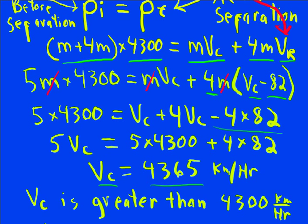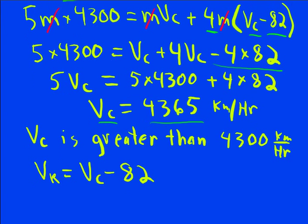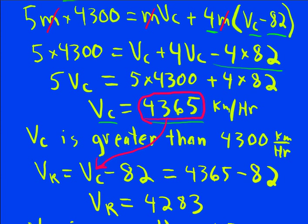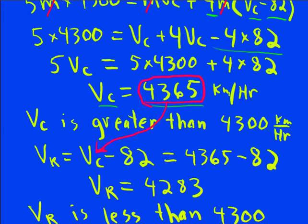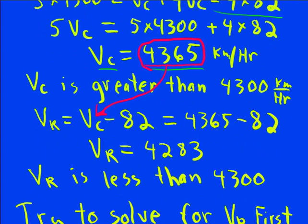To get Vr, you could do it in a similar way. But since we already have an equation for Vr, it's Vc minus 82. We just put in what we know Vc to be, and we get 4,283. And so Vr is less than 4,300, so that makes sense. So we probably did this right.